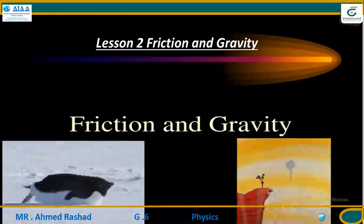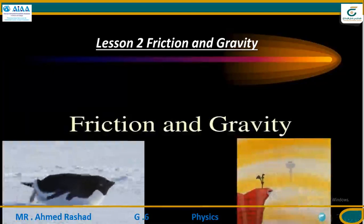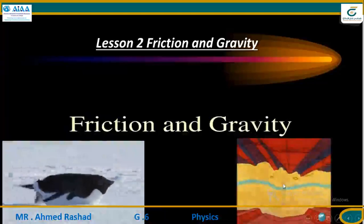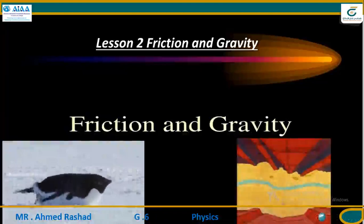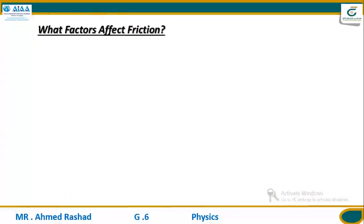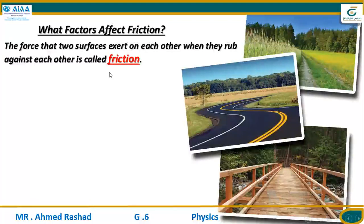You can imagine the difference between friction and gravity. Friction is the force that occurs between two surfaces that are rubbing together. But gravity pulls objects down to the earth's surface or acts as attraction between two objects. The force that two surfaces exert on each other when they rub against each other is called friction.